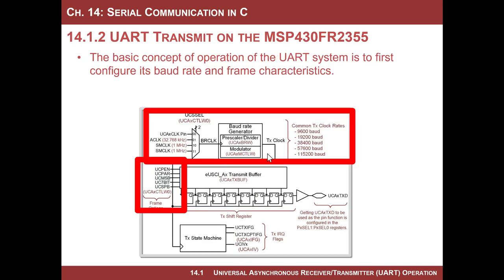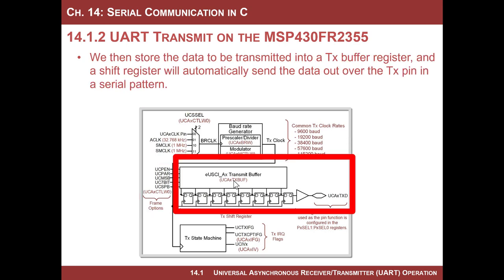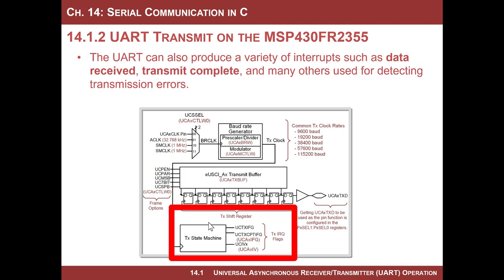The basic concept of configuring the UART is to configure the baud rate by choosing your clock and setting the configuration registers to get the appropriate clock. Then you set up the framing for the UART bit sequence. You drop a value into the transmit buffer and it automatically shifts the data out. There's also a state machine that handles shifting out the information and applying frame settings, and it has a whole bunch of flags — like is the buffer empty, in process, done, ready, or was there corruption — that you can use to generate interrupts and track what's happening.